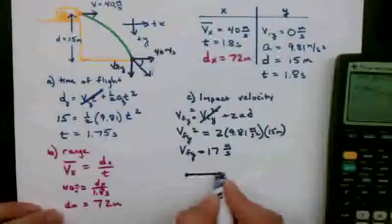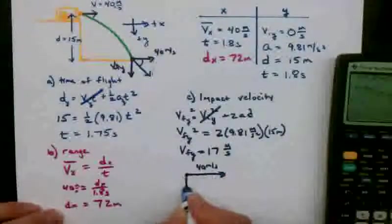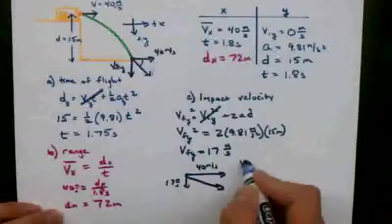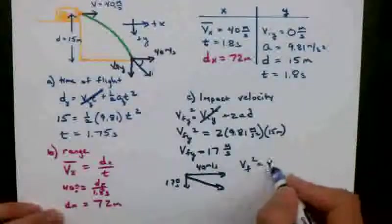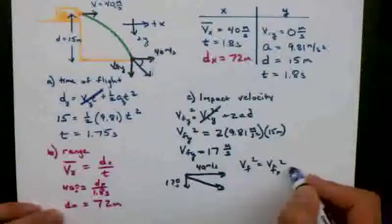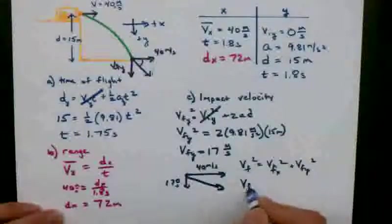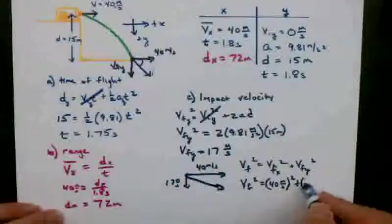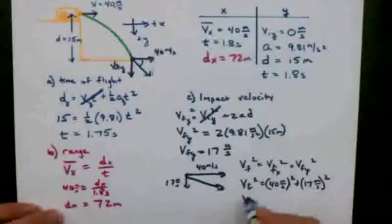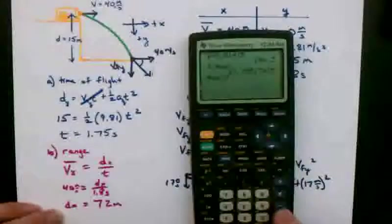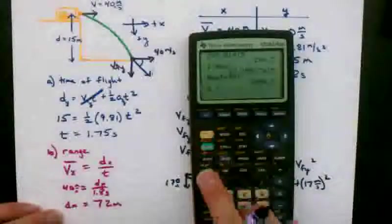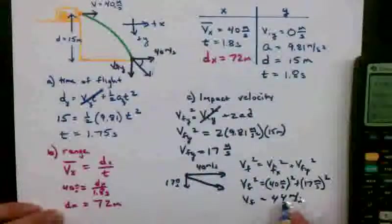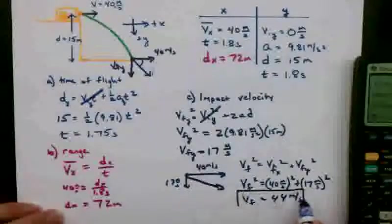So we know that the projectile is going over at 40, but it's going down at 17. And so to get the resultant, I'll do the Pythagorean theorem. v final squared equals v final in the x squared plus v final in the y squared. v final squared equals 40 meters per second squared plus 17 meters per second squared. v final turns out to be 43.5, so we'll say 44 meters per second. All right, we're going to need that in a minute.